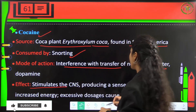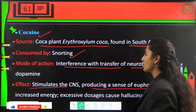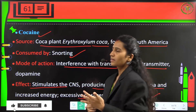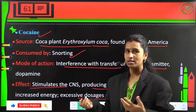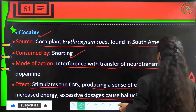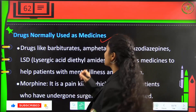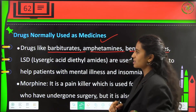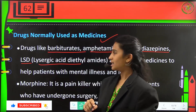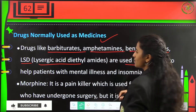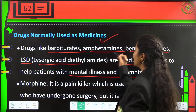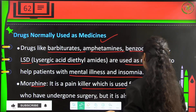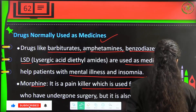The effects of cocaine include stimulation of the CNS — over-stimulation produces a sense of euphoria and increased energy, and excessive dosages can cause hallucinations. Drugs also used as medicines include barbiturates, amphetamines, benzodiazepines, and LSDs (lysergic acid diethylamides), which are used to help patients with mental illness and insomnia. Morphine is a painkiller used for post-surgical patients but is also an abusive drug.